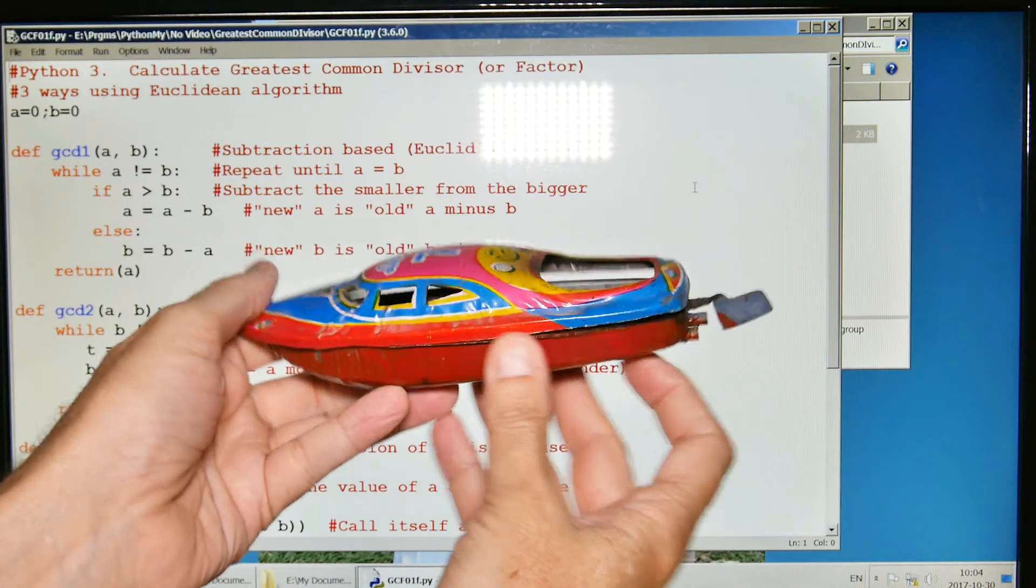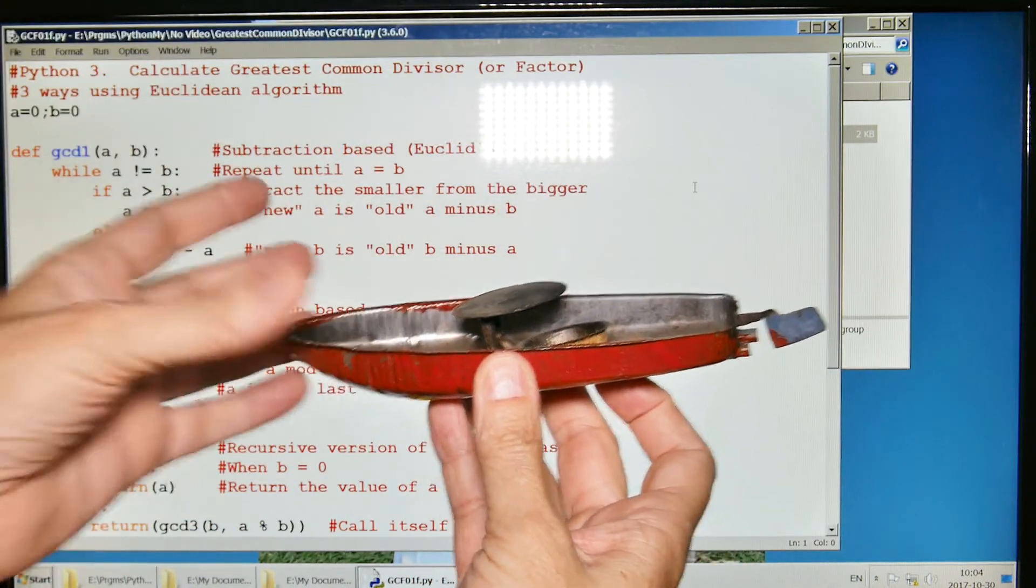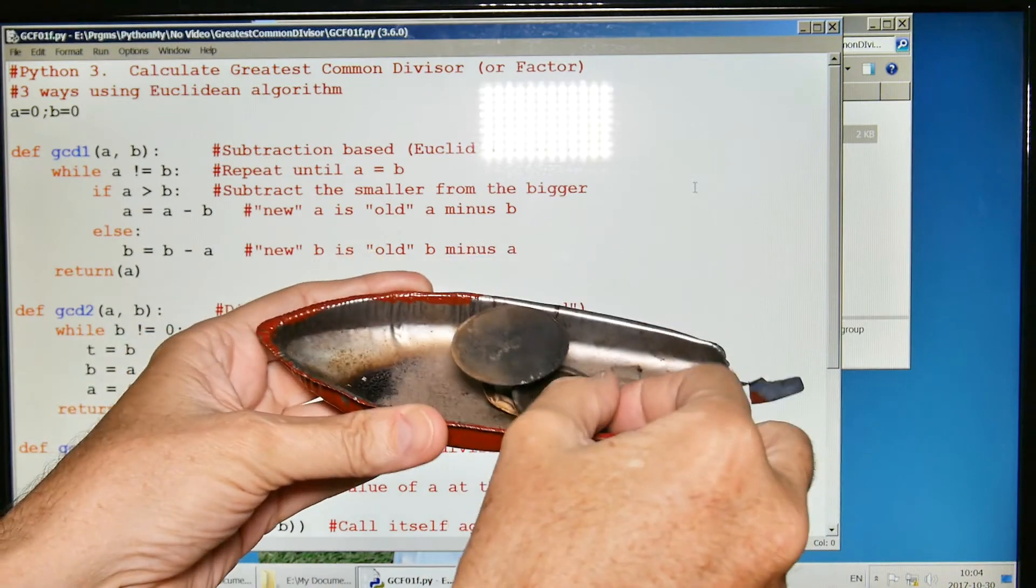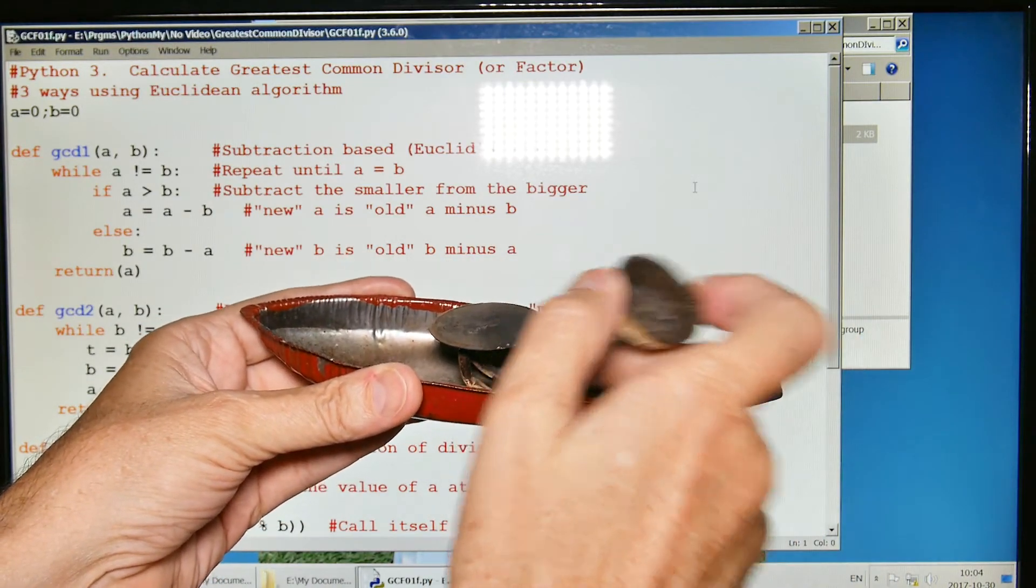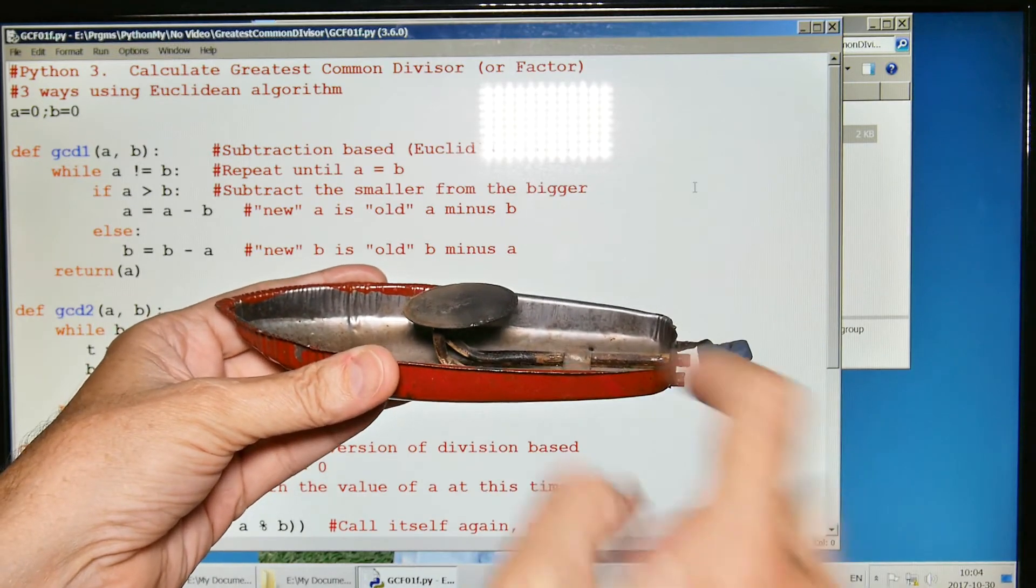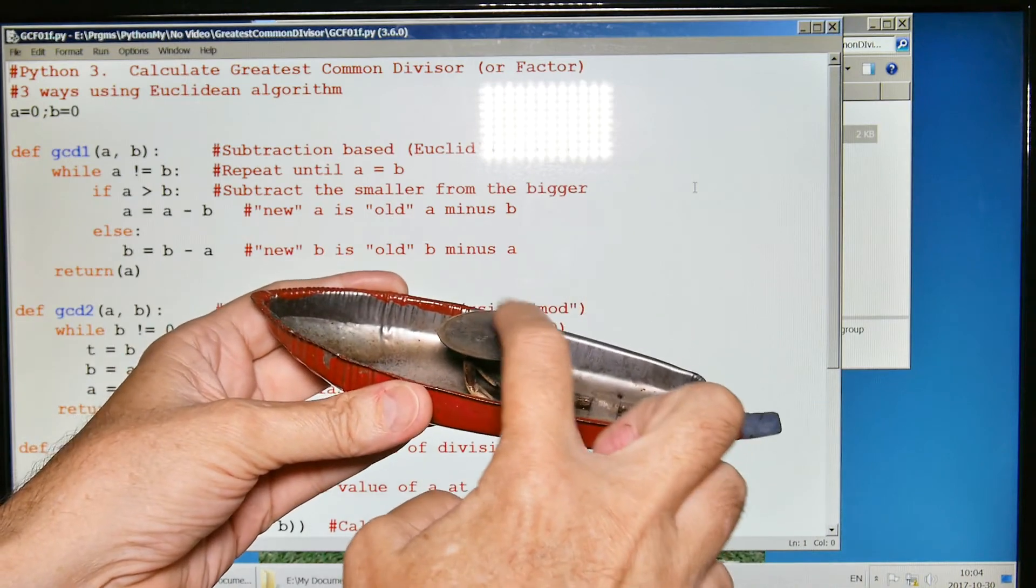This is a pop-pop boat, and if you've never seen one, they're kind of interesting. It's a kid's toy. You have this little pan and you put a candle in there, you light it and put it underneath the motor here. What it does is it heats up this piece right here. It'll have a little bit of water in it.